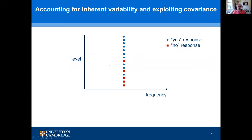Here's an illustration of a basic problem in estimating the audiogram. There's inherent variability in the responses of subjects. Imagine you present a signal with a fixed frequency at various different levels. When the subject says yes, that's indicated by a blue symbol; when they say no, that's indicated by a red symbol. There's a region where responses are mixed — if you present the sound repeatedly at one of these levels, the subject will sometimes say yes and sometimes say no.